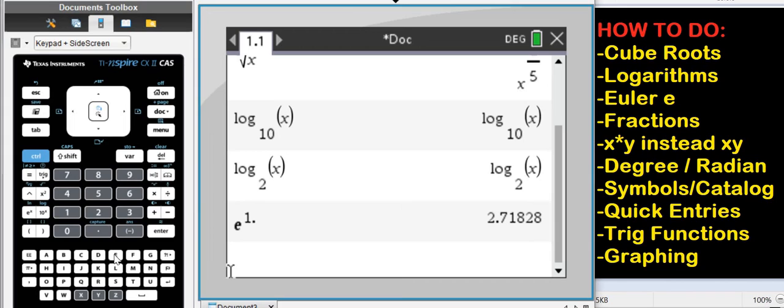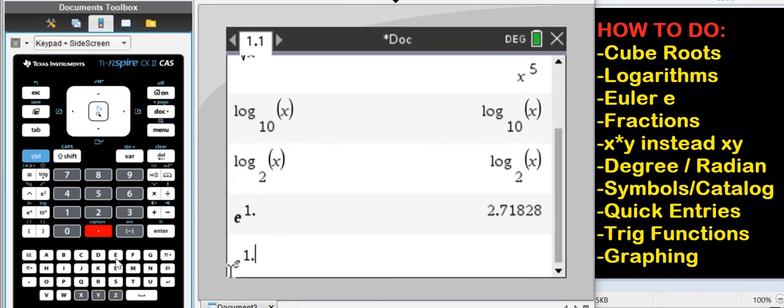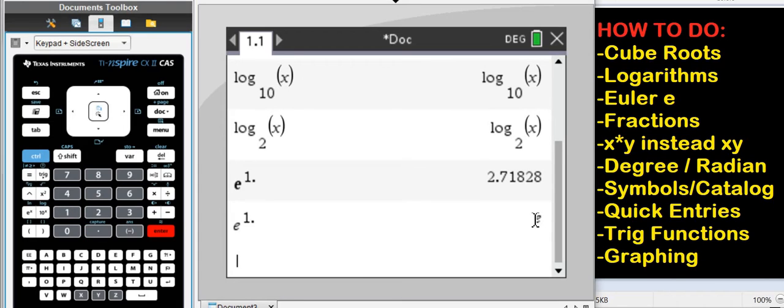If you fall for the letter E and do e to the 1, you're just going to get letter E. That's a variable E. So the variable E is different from the Euler constant E.